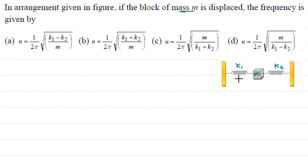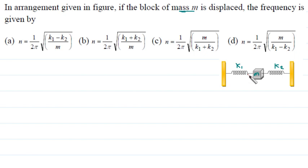If this mass is displaced a little, the block starts oscillating. When the block moves to one side, spring k1 goes into compression while spring k2 goes into extension at the same time. So both springs are attached to the single block — this is a parallel combination.